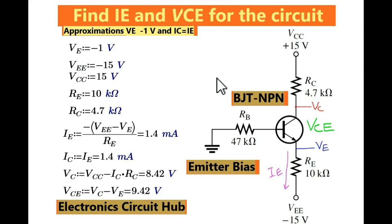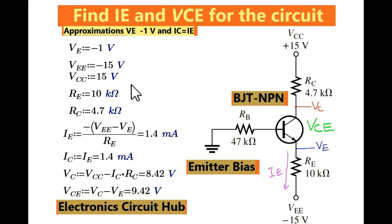Hope you have understood how to solve the problem for emitter biased configuration. That means if you have the voltage at VCC and you have the voltage VEE, how to find out the value of IE and VCE. You can follow these simple steps and easily solve the problem. If you have further questions, feel free to ask in the comment section. Thanks for watching.